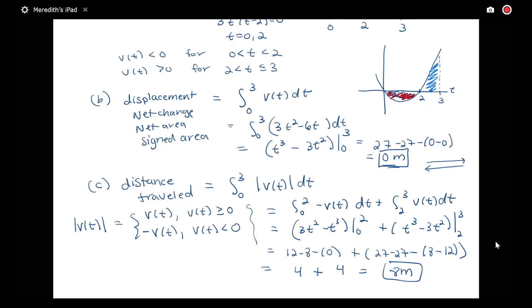From what we just did, it turns out this blue region had an area of 4 meters, and this red piece also had an area of 4 meters. Adding those together, we get that total distance of 8 meters. When we do area above minus area below, we get that displacement of 0 meters.